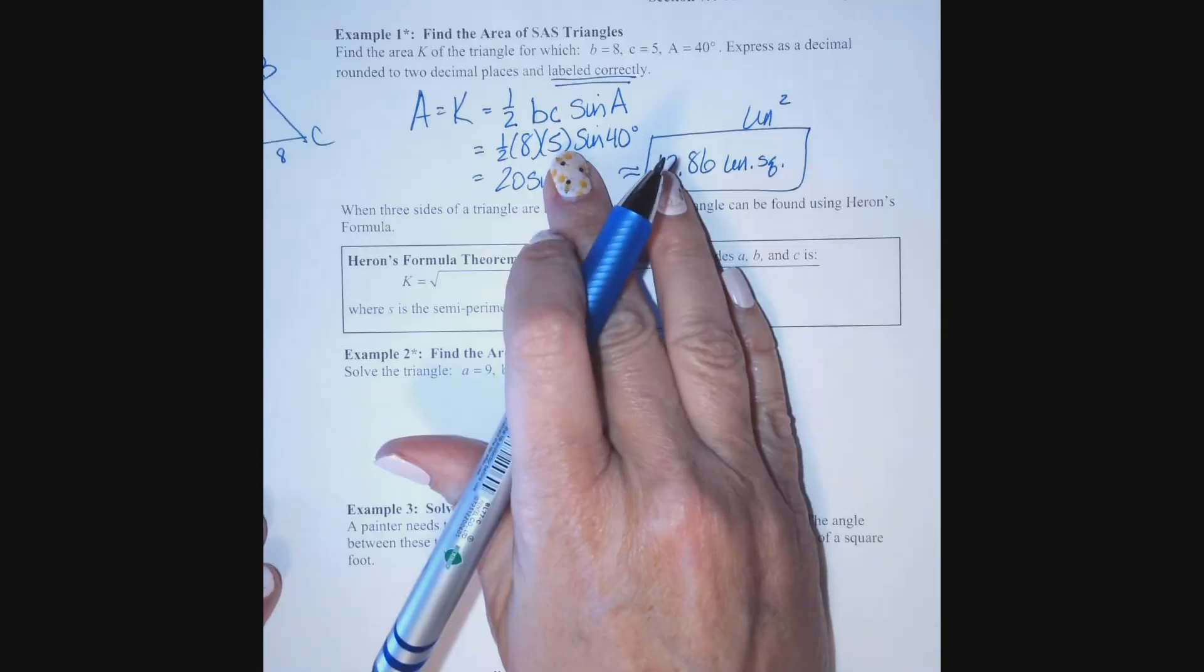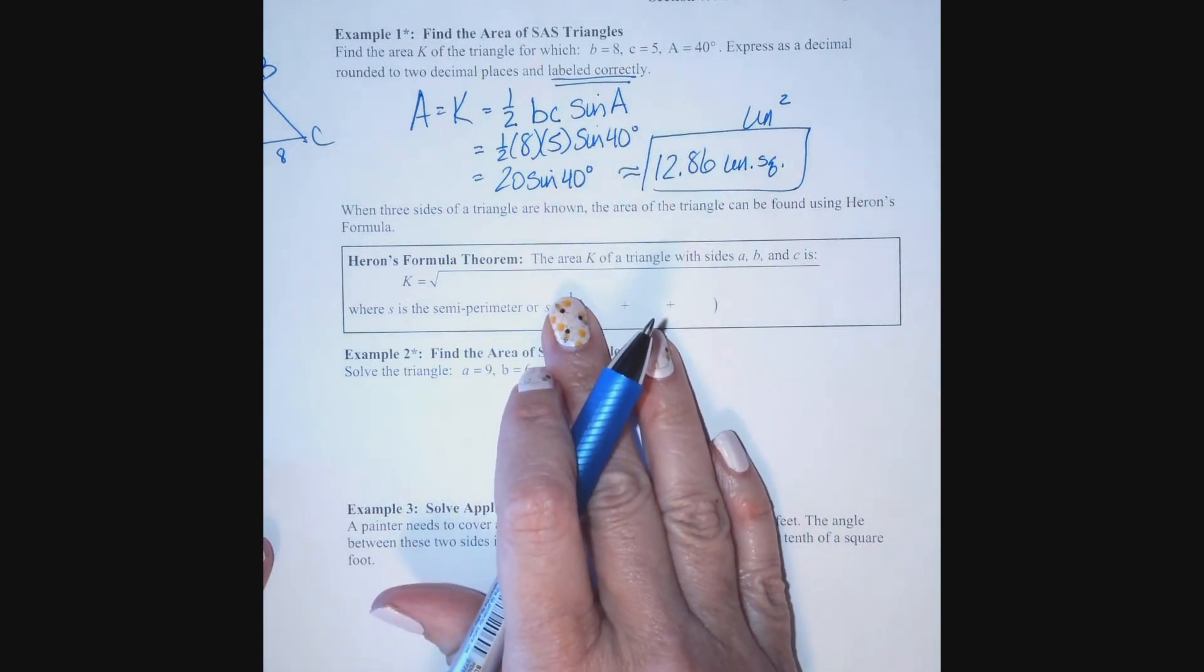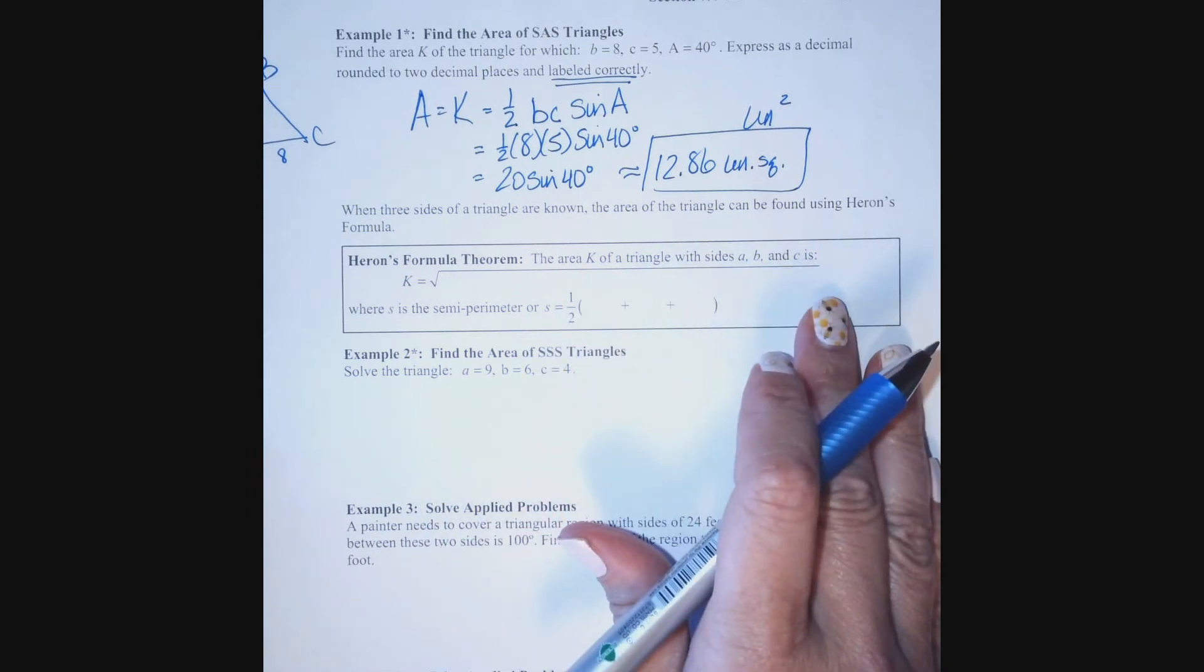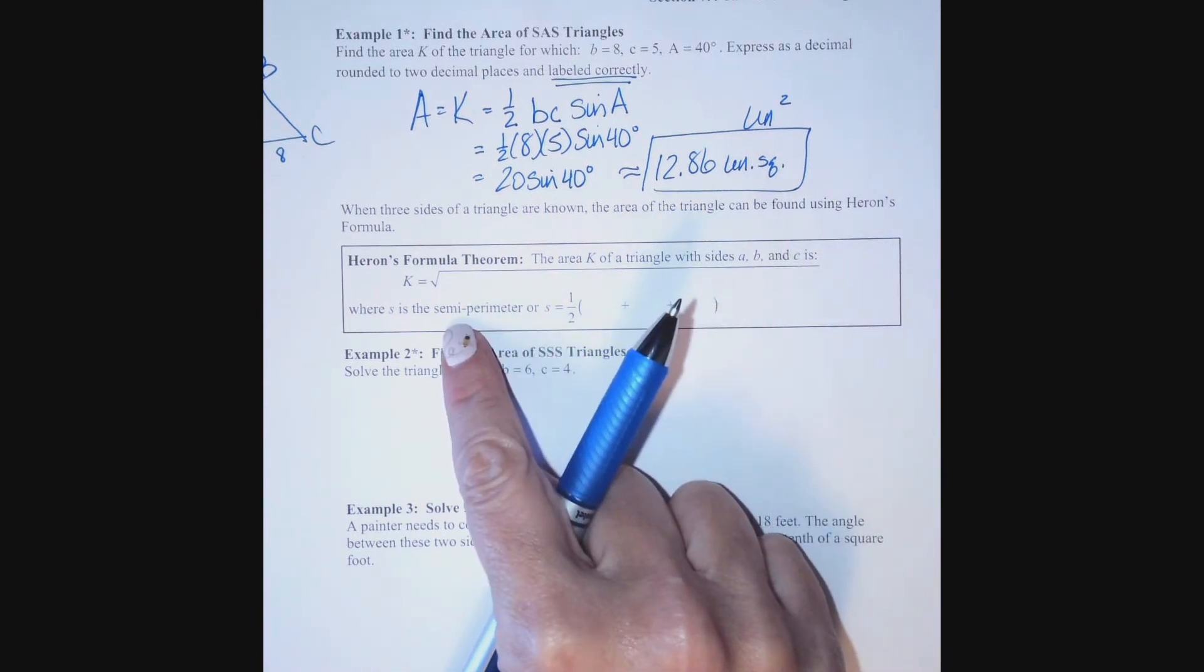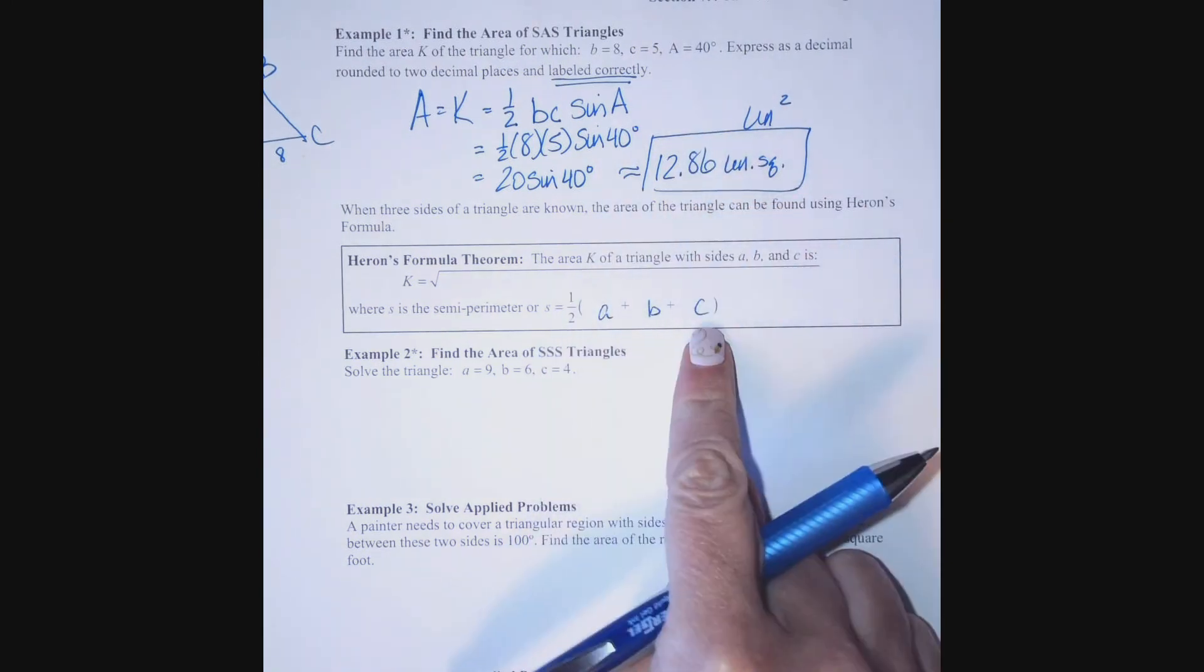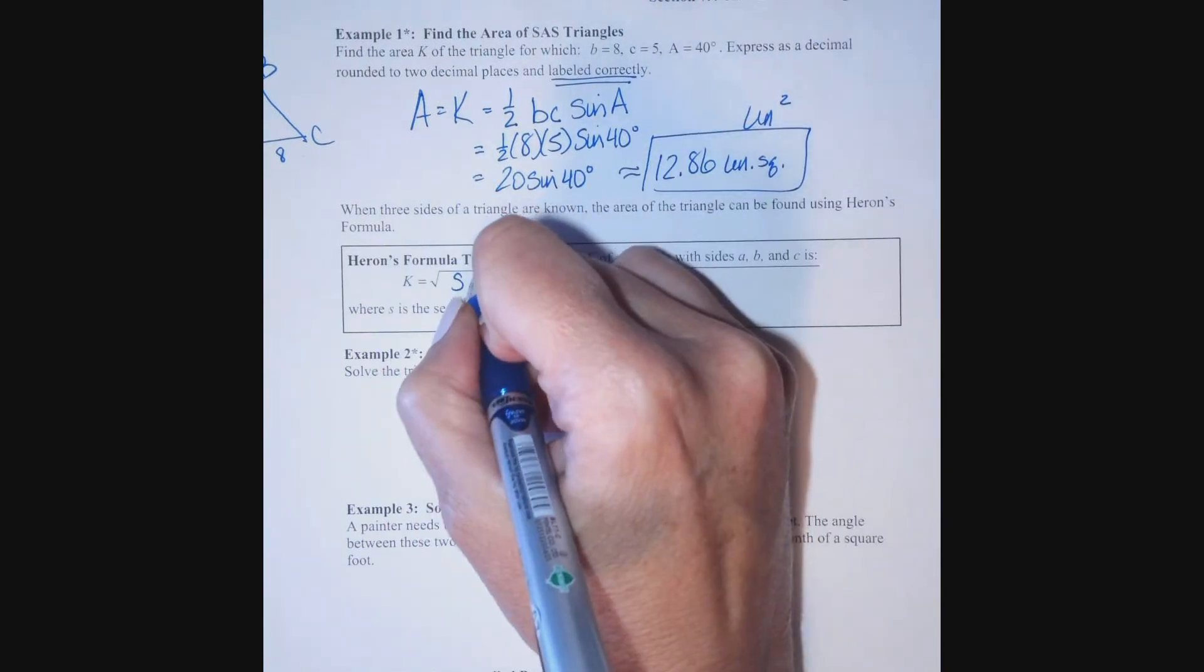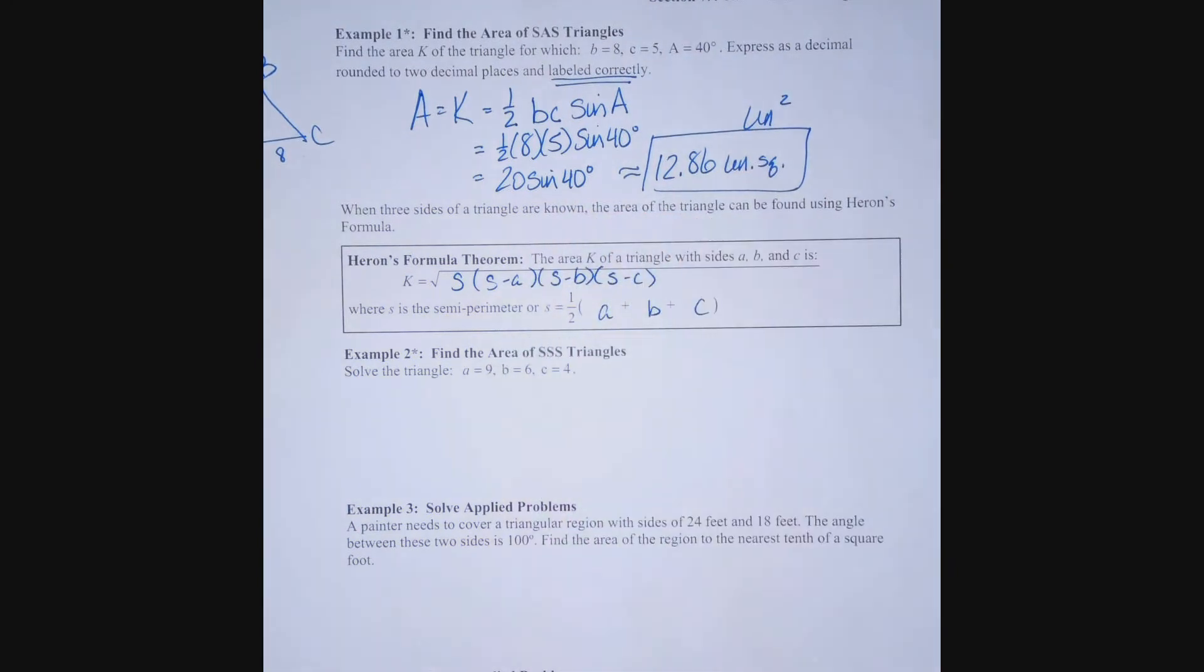So, we did our area formula for side, angle, side. What if we know all three sides? Well, if you happen to know the length of all three sides of a triangle, you can use what we call Heron's formula. It's named after a mathematician. Heron's formula theorem tells us that the area K of a triangle with sides A, B, and C uses the idea of semi-perimeter. Perimeter is the distance around any figure. Semi means half. So, semi-perimeter is half the distance around your triangle. To find the semi-perimeter of your triangle, you're going to take half the sum of the sides. Heron's formula is the square root of the product of the semi-perimeter times the difference of that semi-perimeter and each one of the sides.